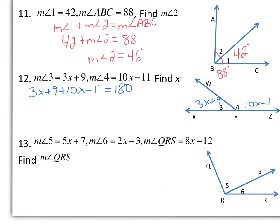And then we can combine like terms, solving for X. Then divide by 13, and we get that X equals 14, and that's all we had to do in that problem. We didn't have to find any of the measures of the angles.